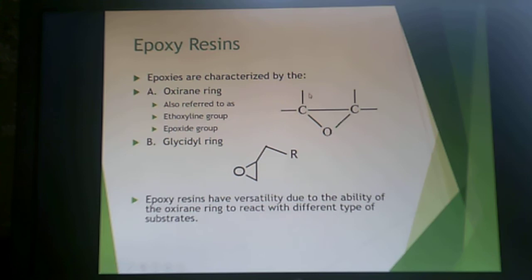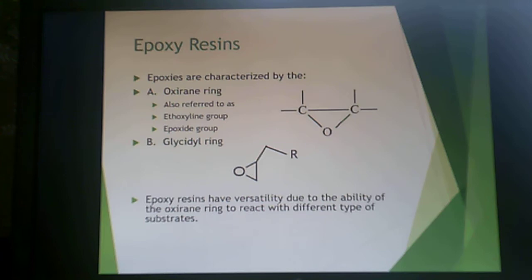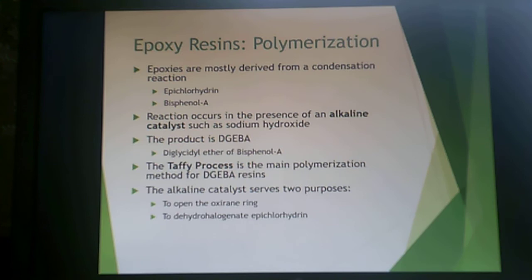Epoxies are characterized by the oxirane ring, also known as the ethoxylene group or epoxide group. When an extra methyl group and other R-groups are attached, it becomes a glycidyl ring — there is an important distinction between the oxirane group and the glycidyl group. Epoxy resins are versatile due to the ability of the oxirane ring to react with many different substrates; opening those rings generates many hydroxyl groups, which interact strongly with a wide variety of surfaces.